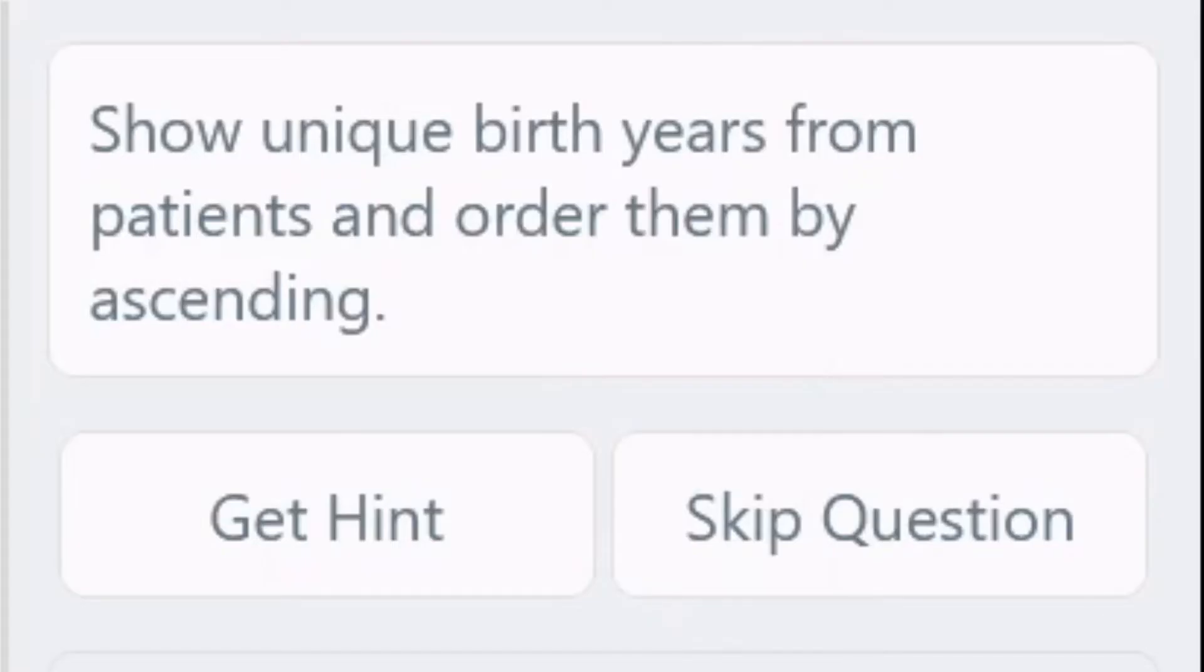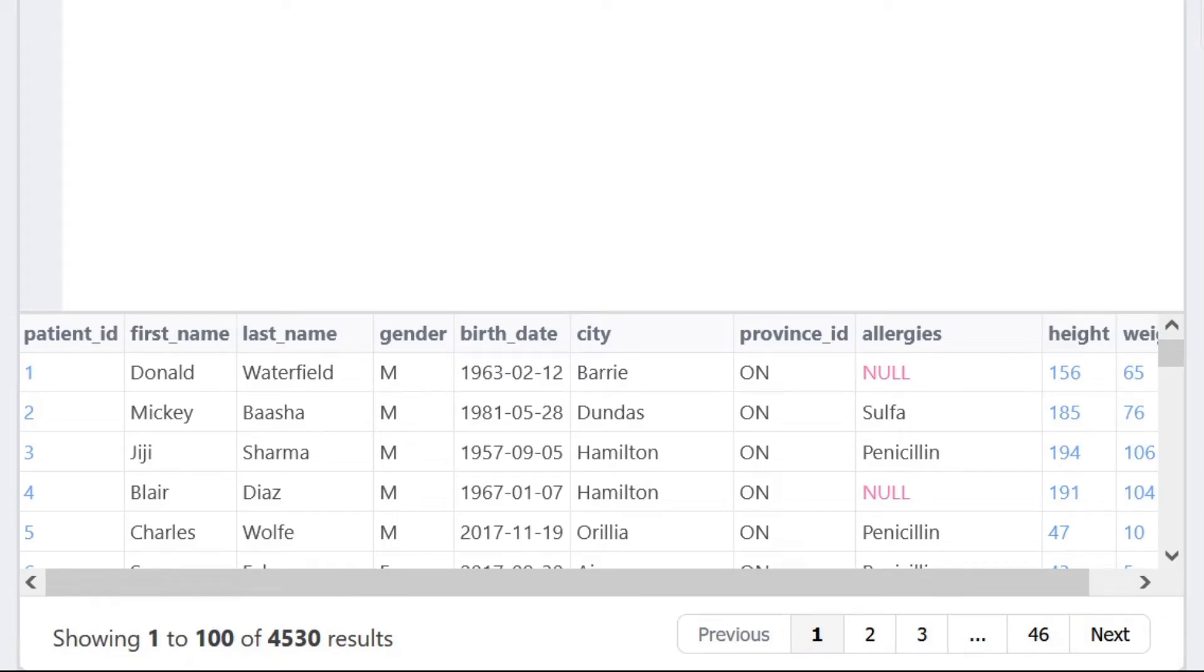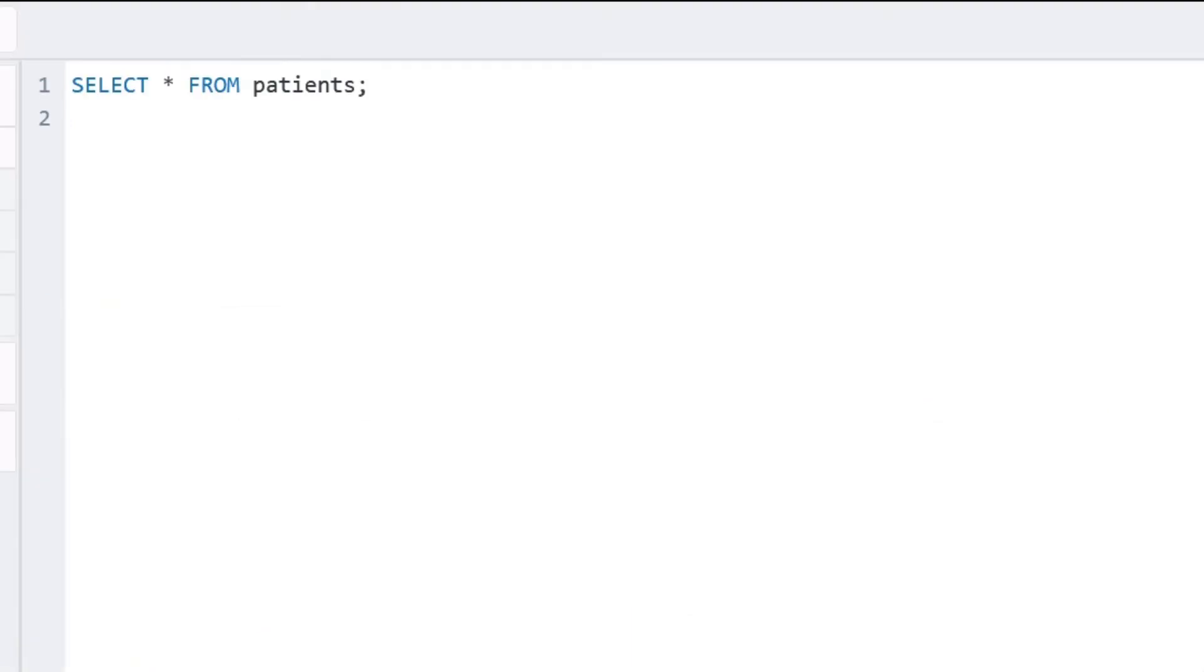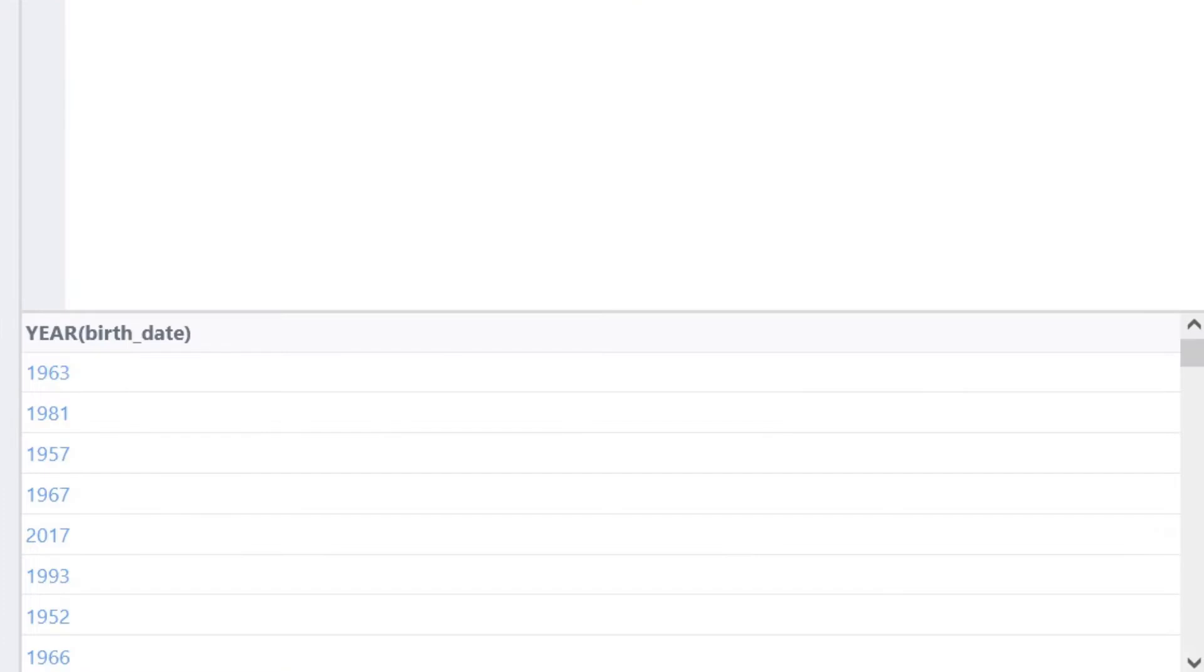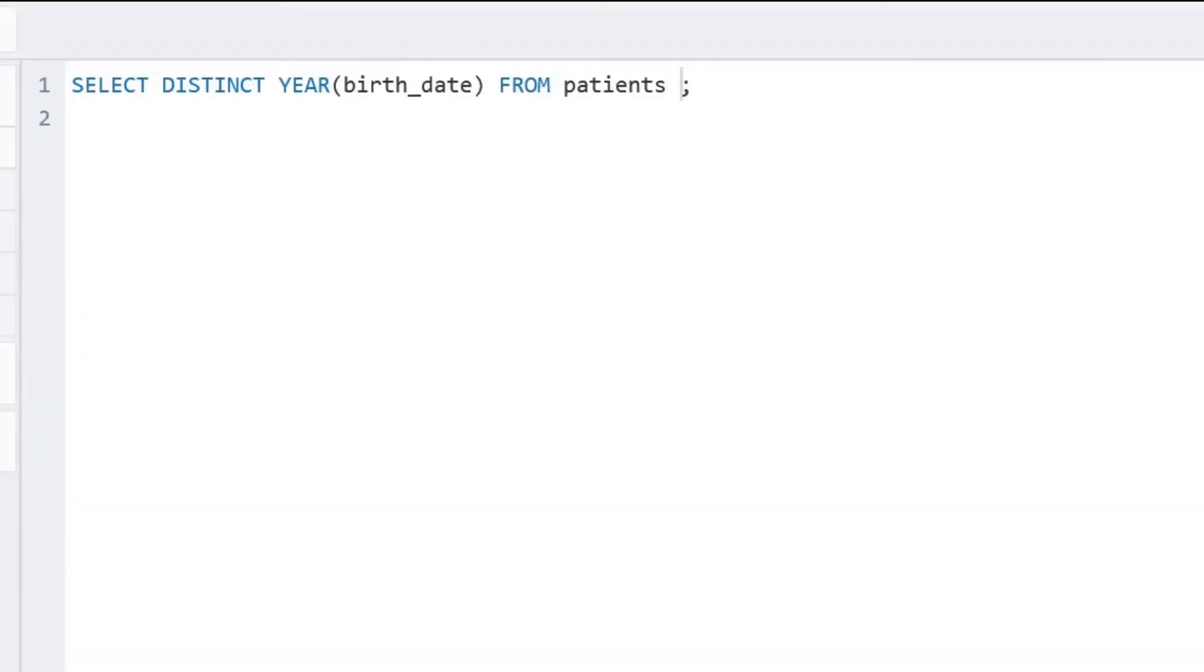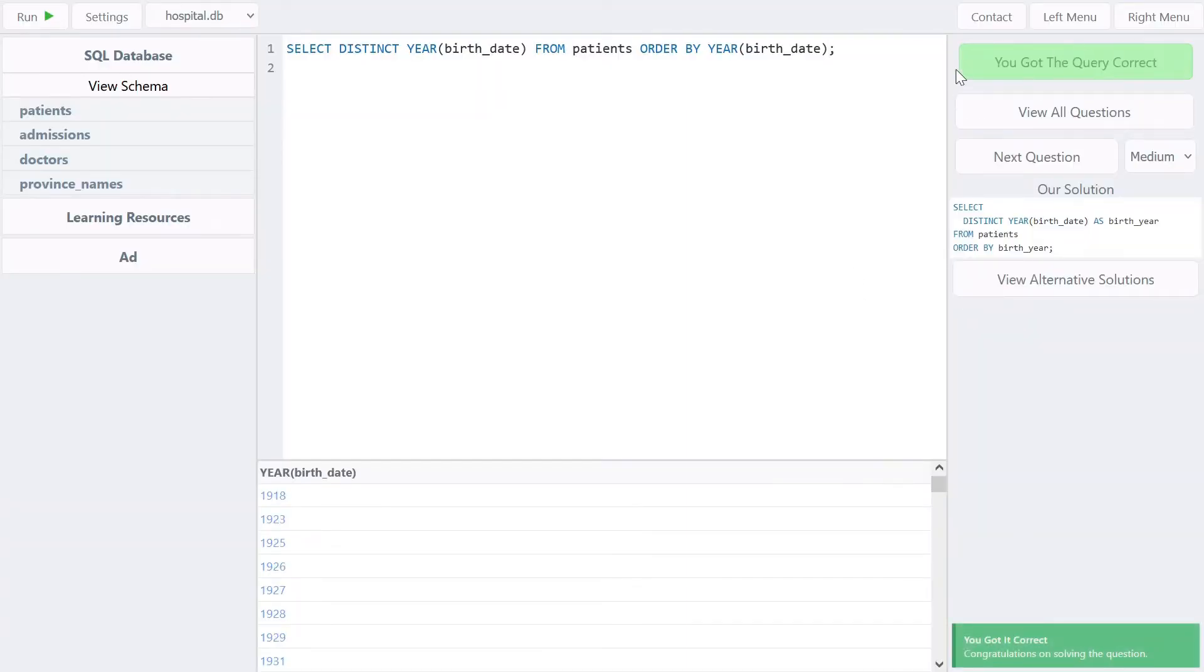Here comes our first question: show unique birth years from patients and order them by ascending. We have the patient table with a birth date column. We'll use YEAR from the birth date column and use the DISTINCT keyword. We also want to order them by ascending, so we'll use ORDER BY birth date. Let me run this query. You got it correct! We have successfully solved the first question.